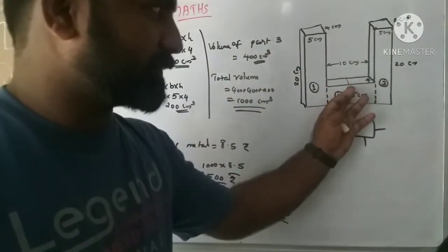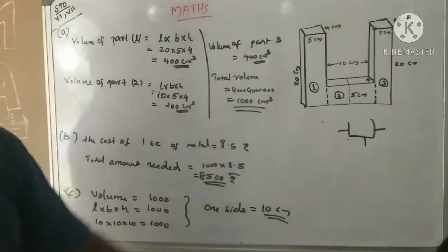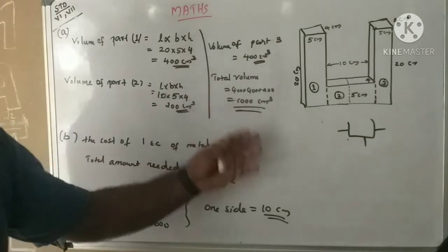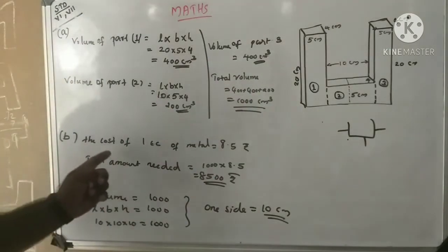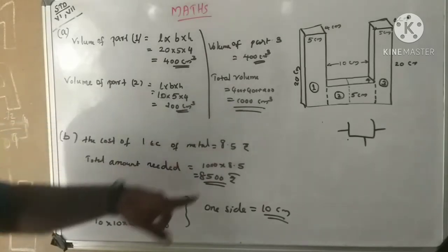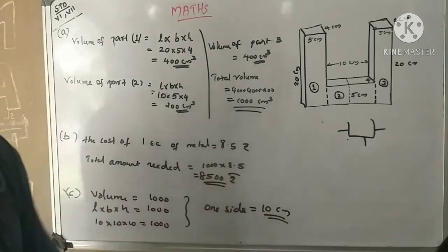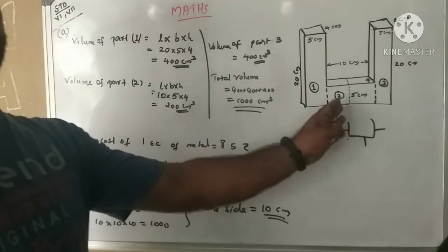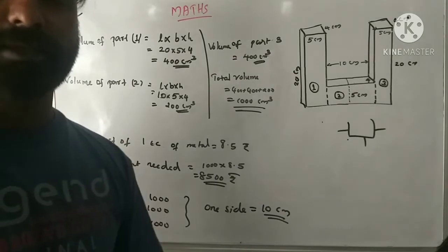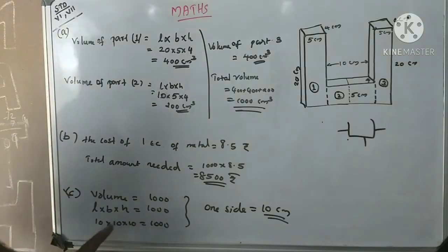Part 2: length is 10, dimensions 10 into 5 into 4 = 200 cm³. Total volume: 400 plus 400 plus 200 = 1000 cubic centimeters. The cost of 1 cubic centimeter of metal is 8.5 rupees, so for 1000 cubic centimeters the amount is 8500 rupees. One side is 10 for the recast cube.